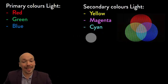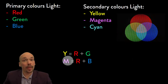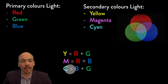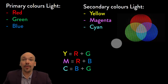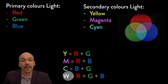To summarize: if you want to make yellow, you need red and green. If you want to make magenta, then you need red and blue. And if you want to make cyan, then you need blue and green. And finally, if you do them all together, then you will get white.